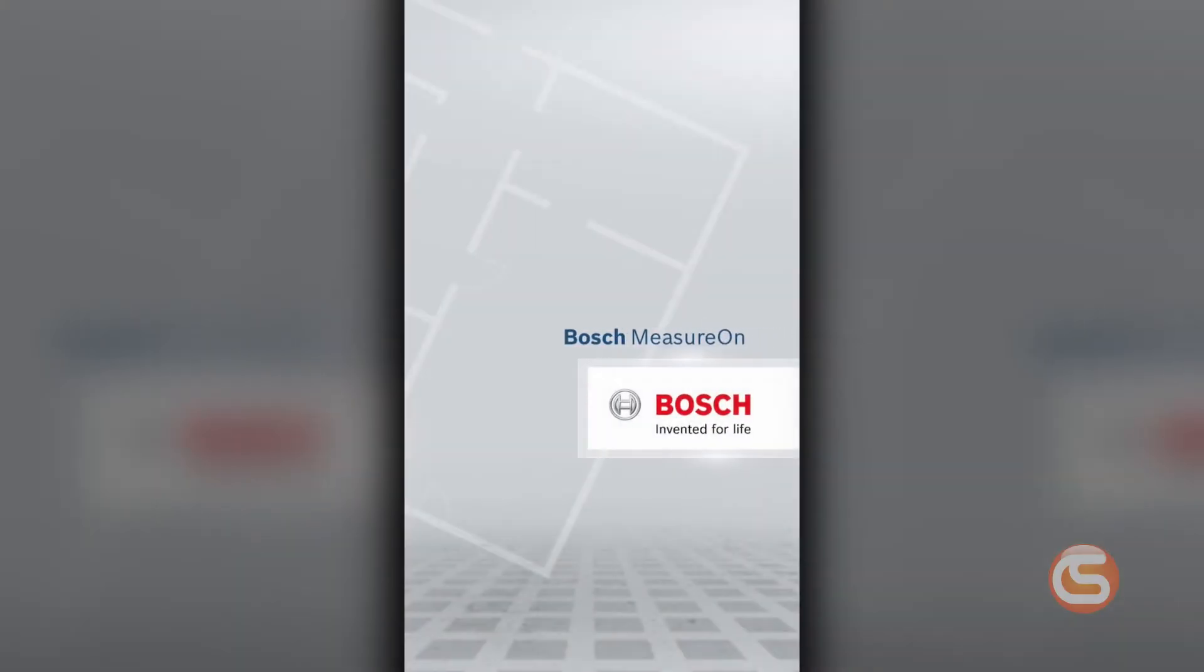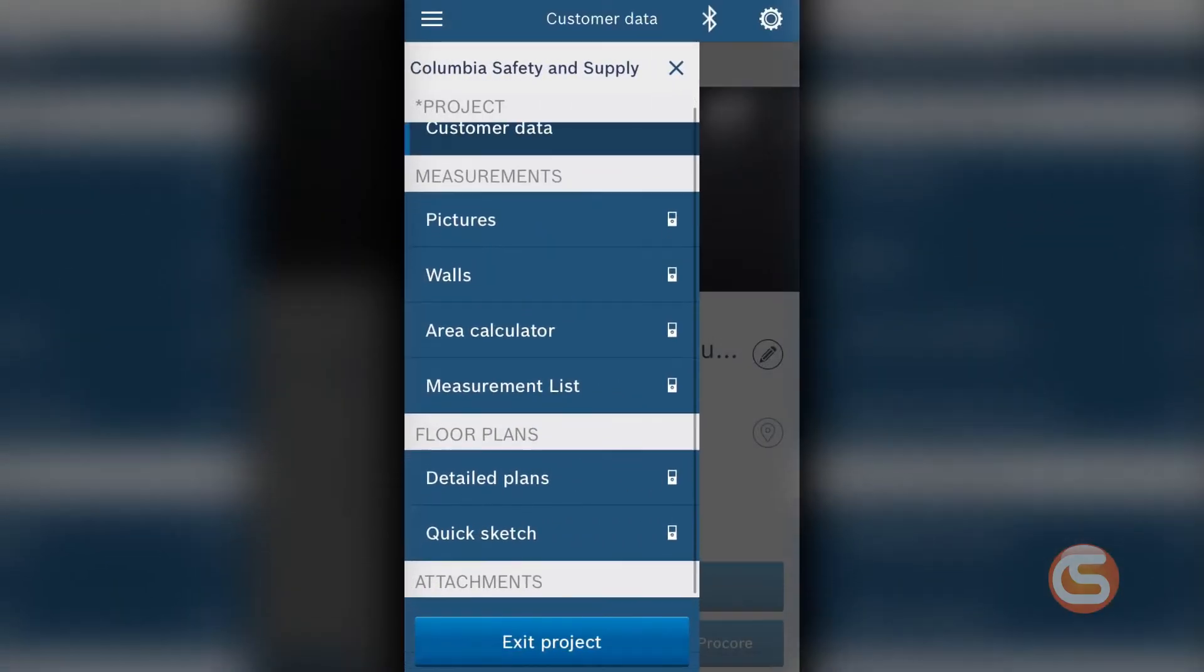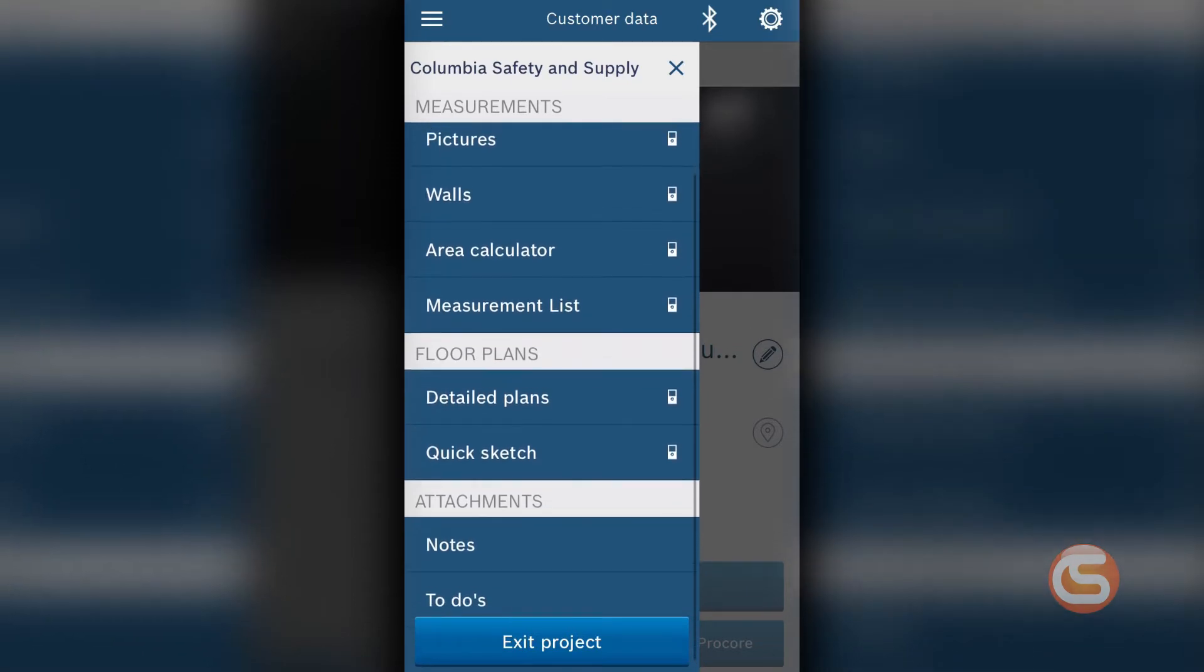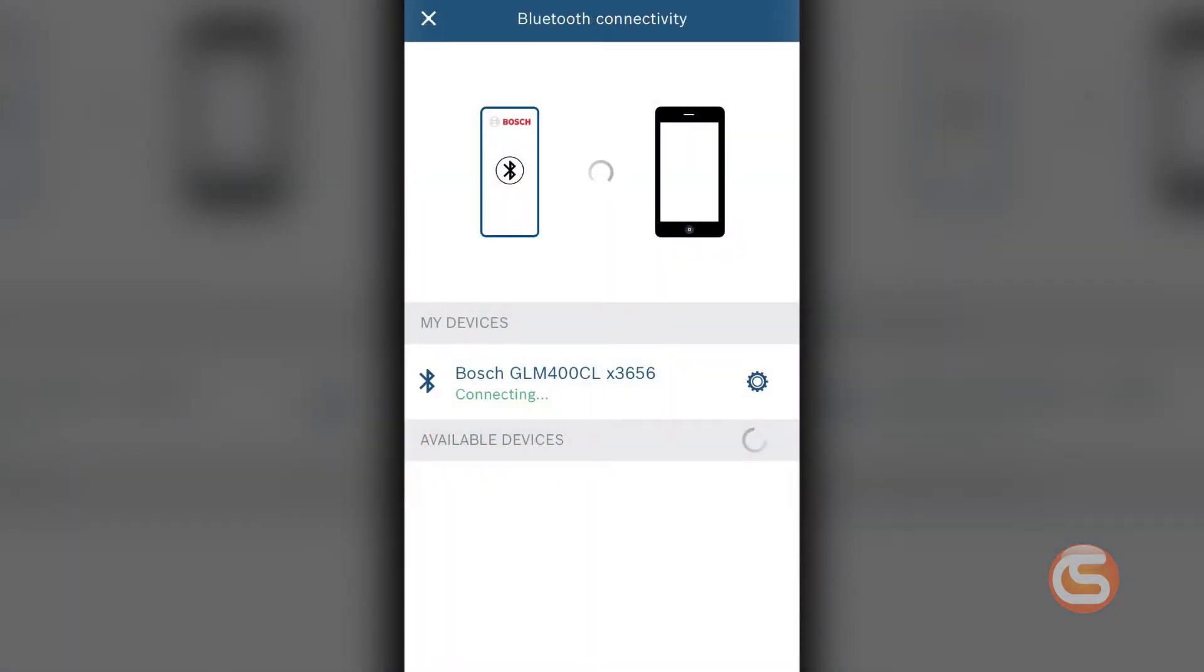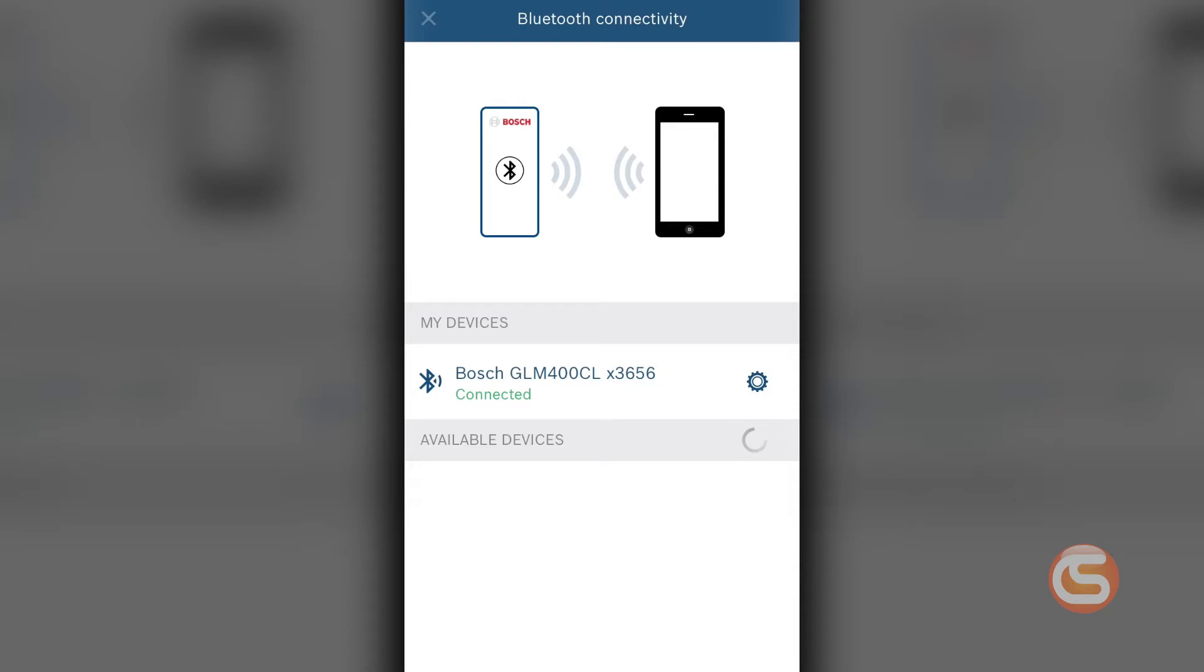And with Bosch's free-to-download MeasureOn app, you can instantly record and organize the measurements you take with the device. Furthermore, that MeasureOn app gives you a clear digital project overview, with floor plans, measurements, photos, and notes.